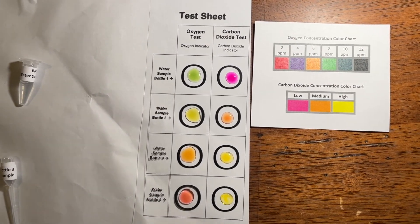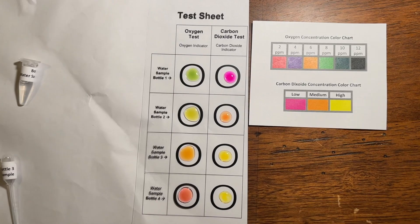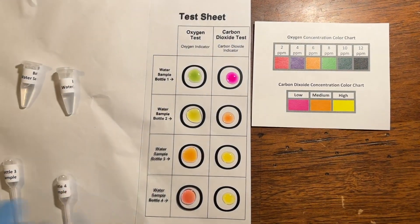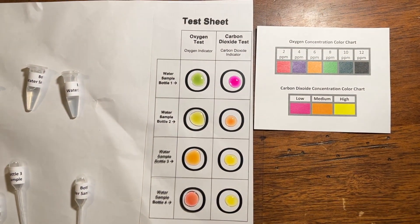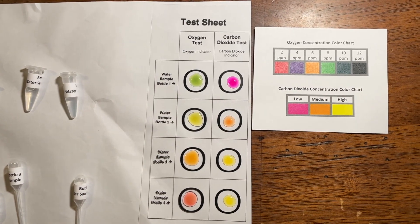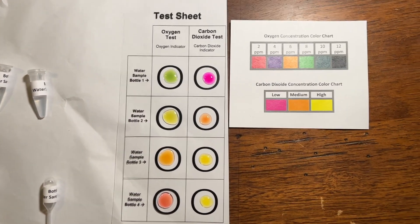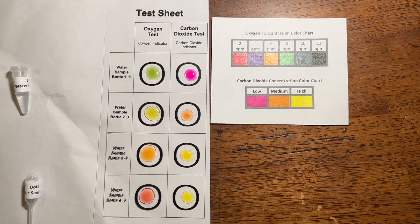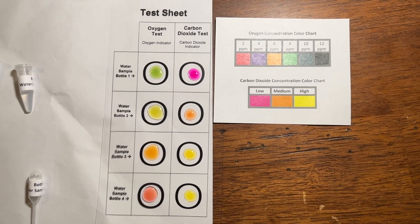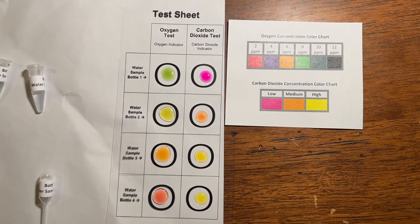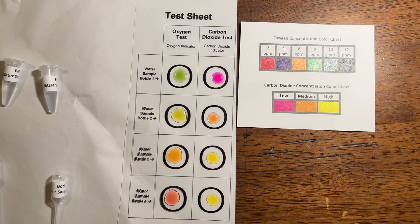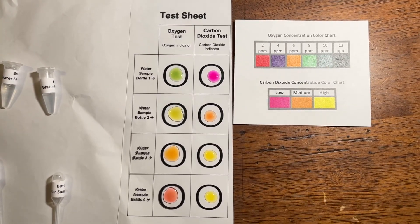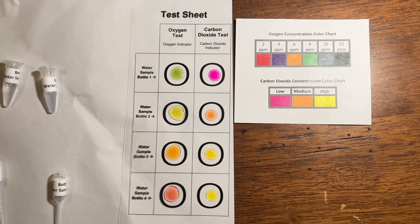To test the amount of oxygen, we use the oxygen indicator. First, drop one drop of oxygen indicator on each of the circles and then drop two drops of water sample from each of the bottles. Use the color indicator chart to determine the approximate parts per million amount of oxygen.